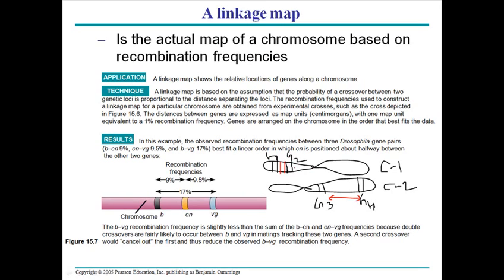Linkage means those two genes on chromosome one — gene one and gene two — tend to stay together during cell division and meiosis, because the probability of separating them via crossing over is very small. That gives a smaller recombination frequency. By contrast, genes far apart have higher recombination frequency. This is why we use a linkage map — it gives us the map unit distance that reflects the exact genetic positions of genes.